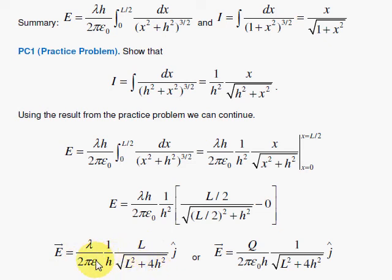Now it's nice to have the answer in two forms. If we take the charge density, multiply it by the total length, get the total charge q. So these two forms are equivalent.